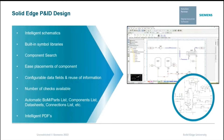Solid Edge P&ID Design provides 2D flow diagram and symbol support to create P&IDs, which are crucial for meeting company and international quality standards. It supports ANSI, DIN, and EN ISO standards, and connects seamlessly to Solid Edge Piping Design, where its definitions control automated 3D piping creation. Features defined in P&ID can be easily placed into a 3D model to provide a complete modular plant design solution. Solid Edge P&ID Design is easy to use with a short learning curve, featuring intelligent schematics and built-in symbol libraries.